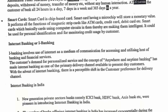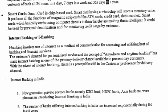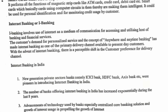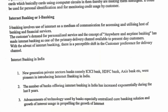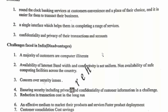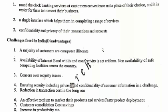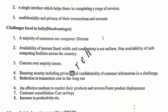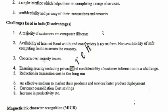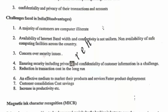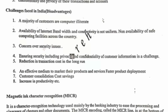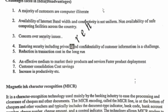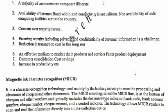RTGS refers to a fund transfer system where the transfer of money or securities takes place from one bank to another on a real-time and gross basis — meaning the settlement is done within that one minute. That is known as Real-Time Gross Settlement.